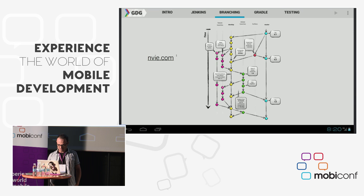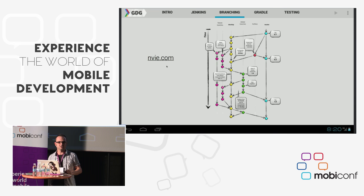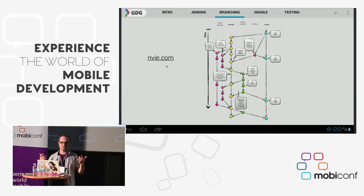The branching strategy is one of my favorite points and I think it's really important. When I talk with companies and mention branching strategy, some say 'we commit when we're finished' — that's not a branching strategy. A branching strategy is about separating the different products and phases of your software. I've modified a well-known model slightly, but like agile processes, this is not a Bible. You have to adapt it to your organization's needs.